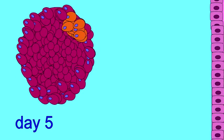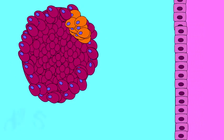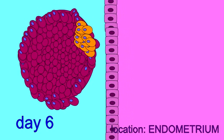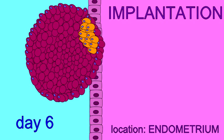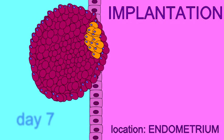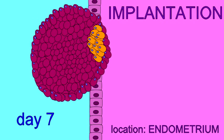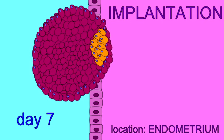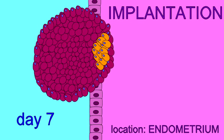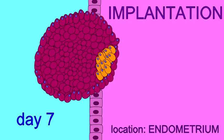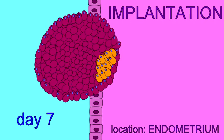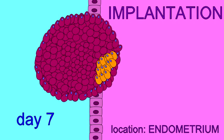The blastocyst will remain in the uterus for about two days before it implants in the uterine lining around day six, and over the course of a day — day seven — it orients the inner cell mass towards the endometrium and attaches more firmly.